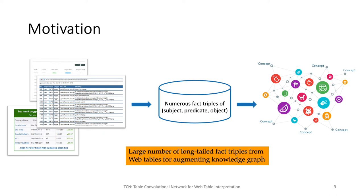Starting with the motivation: today we often represent rich and complex information in the form of a knowledge graph. It has a broad range of real applications such as retrieving information to generate answers for questions that a virtual assistant received, or making personalized recommendations to customers by finding relationships between products such as movies and smartphones. But constructing and managing a large-scale knowledge graph is expensive because it typically needs a large amount of time and human effort. One effective way to alleviate this problem is to automatically obtain fact information in the form of subject-predicate-object triples to augment the knowledge graph.